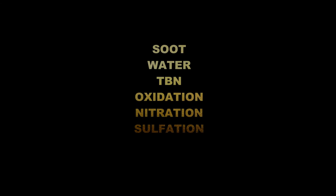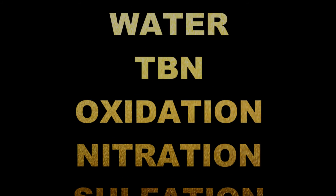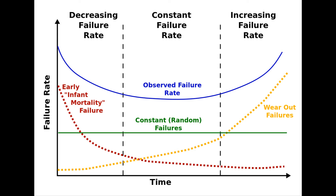You will also receive data regarding the physical properties of your used oil sample. The wear that occurs in all equipment can be divided generally into three parts: a break-in period, a period of normal operation, and an end-of-life period. The basic concept can be seen in what is known as the bathtub curve.